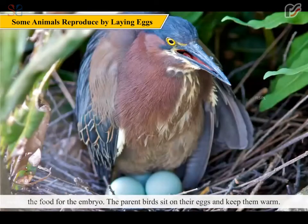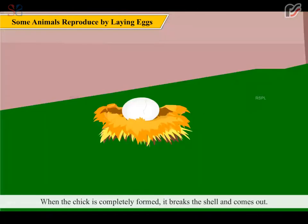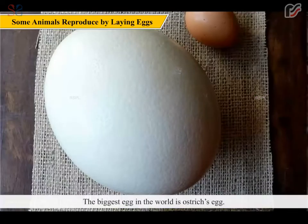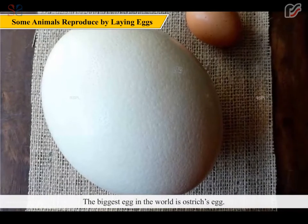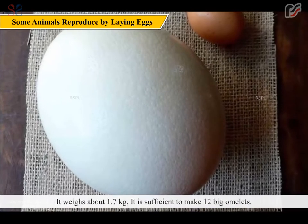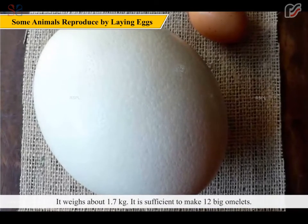The parent birds sit on their eggs and keep them warm. When the chick is completely formed, it breaks the shell and comes out. This is called hatching. The biggest egg in the world is the ostrich's egg. It weighs about 1.7 kg, which is sufficient to make 12 big omelettes.